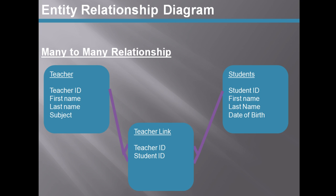Instead of having to create loads of fields in two tables to store the opposite entities, you create a link table in the middle. You may know that students only have three teachers and teachers only have 30 students, but most of the time you don't know how many times each will relate to the other. Creating a link table allows you to keep your database structure clean and smooth — it is the efficient and logical way to do it.